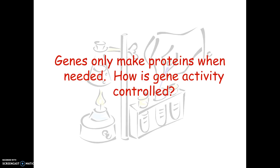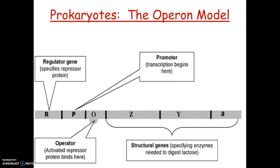Genes make proteins, but we only need to make certain proteins at certain times, so there has to be some mechanism by which we can turn genes on and off. This is called epigenetics — the control of genes, not the genes themselves, but the mechanisms by which those genes are activated in some cells at some times and not in others.